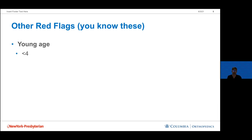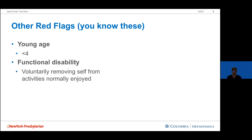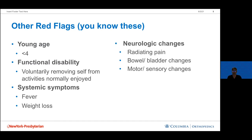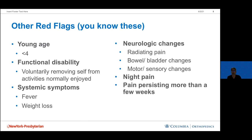Additional red flags: very young age — preschool-age children with persistent back pain warrant further evaluation. A big one for me is functional disability — whether the child is voluntarily removing themselves from activities they normally enjoy. If a child says their back hurts at rest but not when playing basketball with friends, I'm much less concerned. Systemic symptoms like fever and weight loss raise concern for tumors. Neurologic changes even without trauma need urgent workup. Night pain — while possibly growing pains — could indicate infection or tumor. Duration of pain matters too: pain persisting for weeks to months should be worked up.